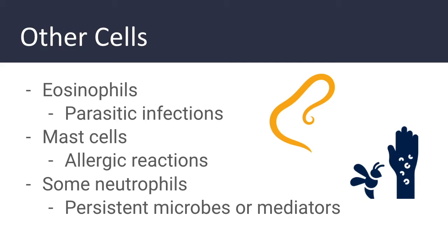Lastly, while neutrophils are characteristic of acute inflammation, many forms of chronic inflammation continue to show large numbers of neutrophils. These may be present due to persistent microbes or due to mediators produced by activated macrophages and T lymphocytes.